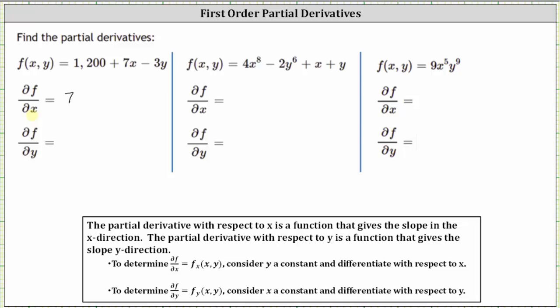Next, we want to find the partial of f with respect to y. So we treat x as a constant and differentiate with respect to y. The derivative of 1200 with respect to y is zero, plus the derivative of 7x with respect to y is also zero, because we treat x as a constant and therefore 7x is also a constant. Then we have minus the derivative of 3y with respect to y, which gives us negative three. The partial of f with respect to y is negative three.